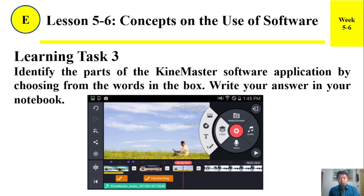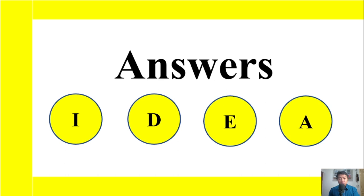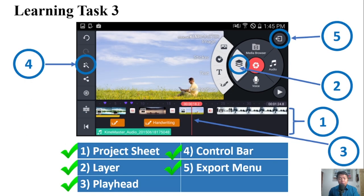Learning Task Number Three. Identify the parts of the KineMaster software application by choosing the words in the box. Write your answer in your notebook. Here are the answers: Number one — Project Sheet. Number two — Layer. Number three — Playhead. Number four — (answer). Number five — Export Menu.